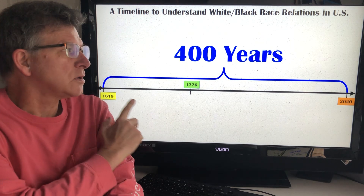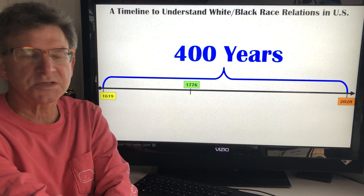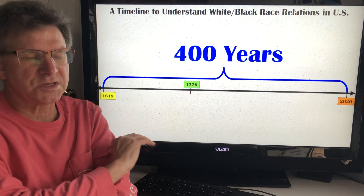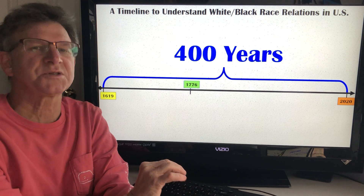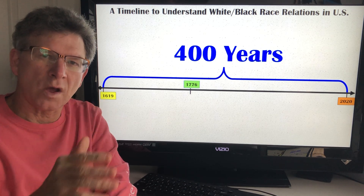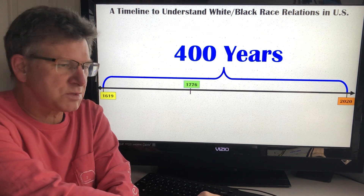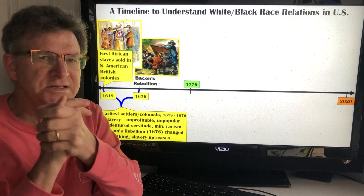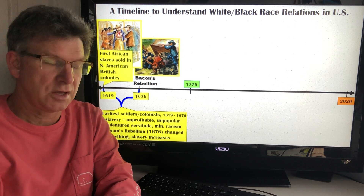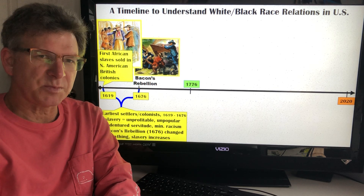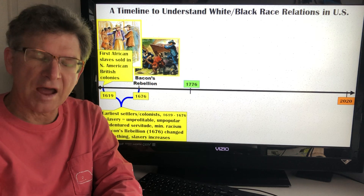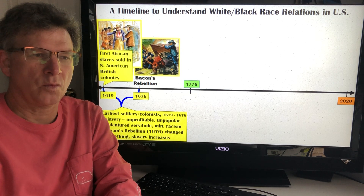Our timeline spans 400 years, starting in 1619 and ending in 2020. We're focusing specifically on significant events that relate to black and white race relations over the course of this 400 years. In 1619, the first African slave was sold on North American soil within the British colonies, specifically in Jamestown, Virginia. It's important to mark this date because it's literally the first time that the enslavement of black Africans becomes a thing in what will be the United States.